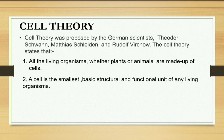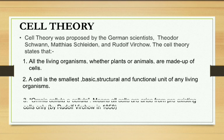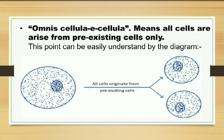The second point is the simple definition of the cell: cell is the basic structural and functional unit of any living organism. The third and most important point, given by Rudolf Virchow, is called 'Omnis cellula e cellula,' meaning each and every cell arises from a pre-existing cell. As shown in the diagram, one cell splits into two cells — this is how new cells originate.